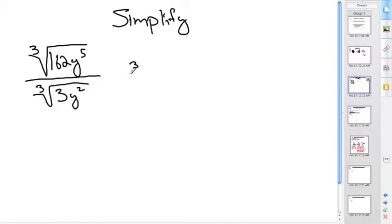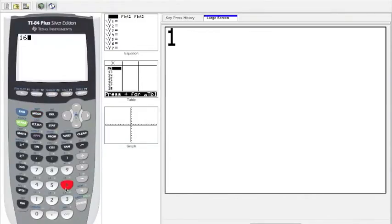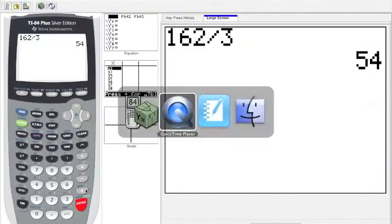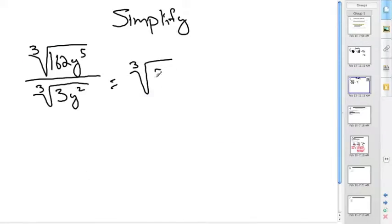Example 2: I'm going to have the third root of something, so I'm going to reduce the fraction. What's 162 divided by 3? 162 divided by 3 is 54, so this is the third root of 54y³.